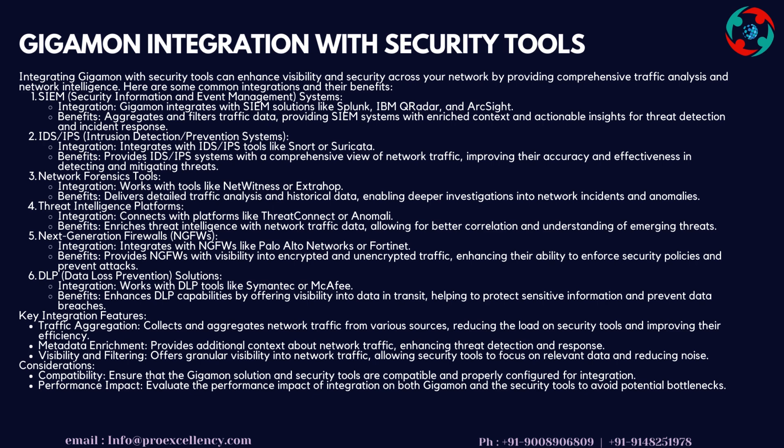Key Integration Features: Traffic Aggregation collects and aggregates network traffic from various sources, reducing the load on security tools and improving efficiency. Metadata Enrichment provides additional context about network traffic, enhancing threat detection and response. Visibility and Filtering offers granular visibility into network traffic, allowing security tools to focus on relevant data and reducing noise. Considerations: ensure that the Gigamon solution and security tools are compatible and properly configured, and evaluate the performance impact of integration to avoid potential bottlenecks.